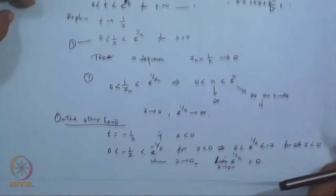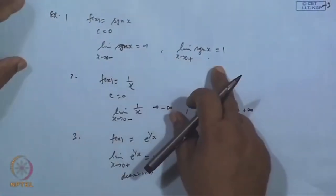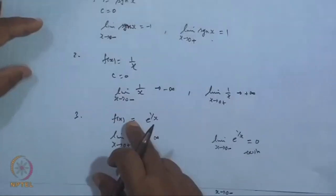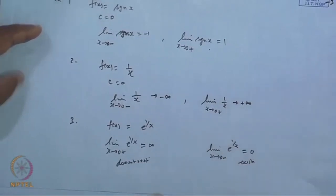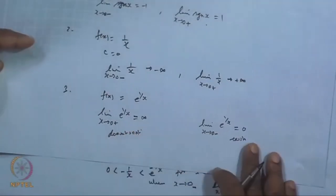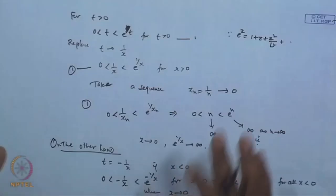So we have seen three cases: (1) both left-hand and right-hand limits exist but are different; (2) neither limit exists (both go to infinity or minus infinity); (3) only the left-hand limit exists while the right-hand limit does not. The concept of one-sided limits depends on the function, and when both limits coincide we say the function has a limit at that point.